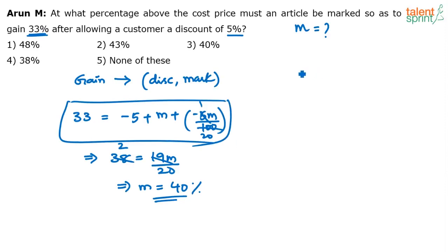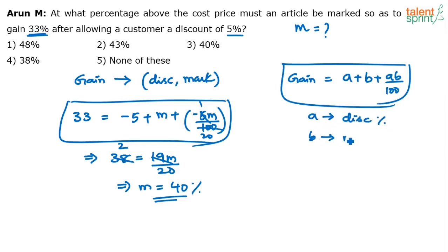Gain is equal to a + b + ab/100, where a is discount percentage and b is the markup percentage. Discount should be taken with a negative sign.